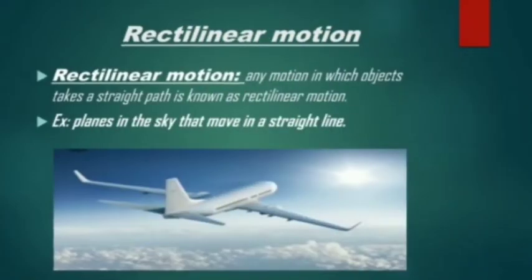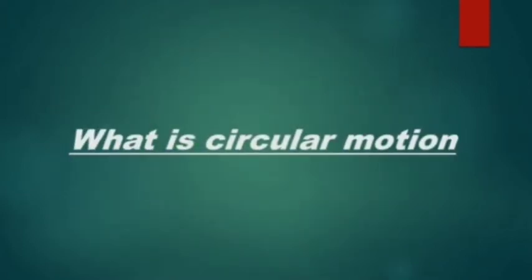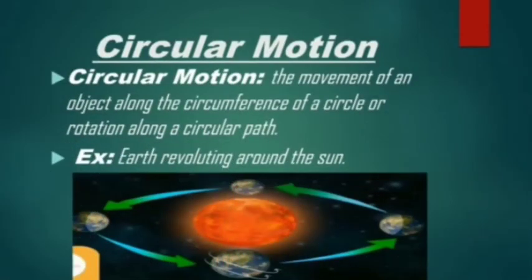For example, a plane in the sky that moves in a straight line. What is circular motion? Circular motion is the movement of an object along the circumference of a circle or rotation along a circumferential path.